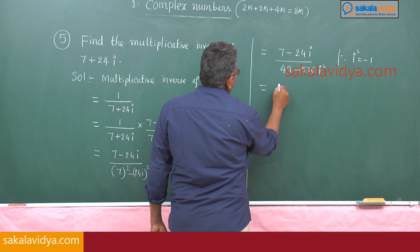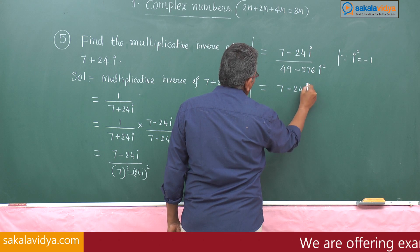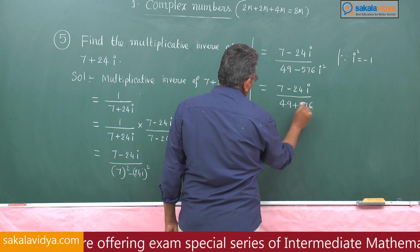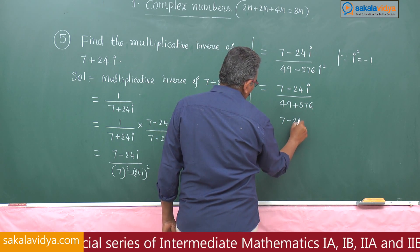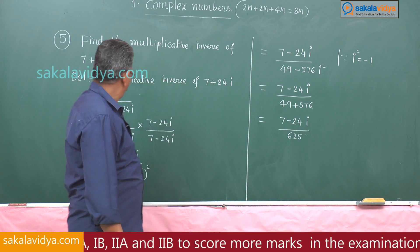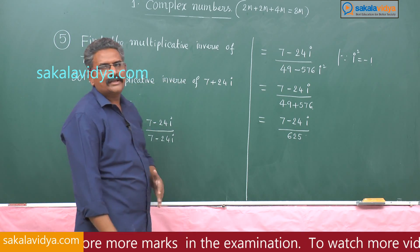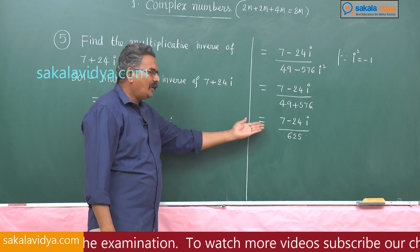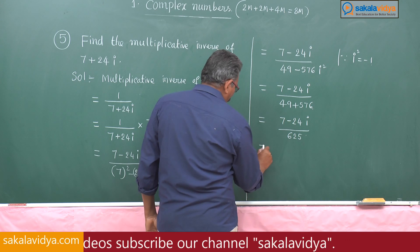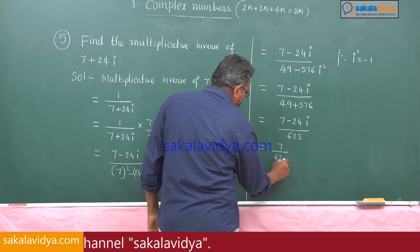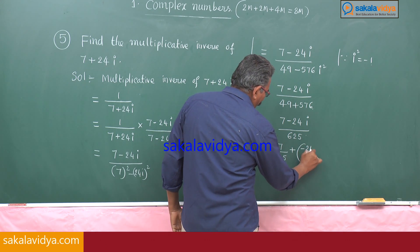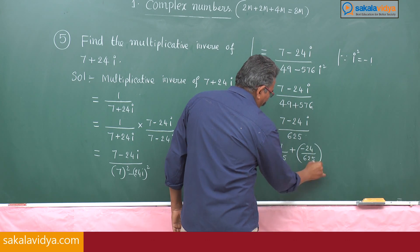So the multiplicative inverse of 7 + 24i is (7 - 24i)/625. If you want to write it in the form a + bi: this equals 7/625 + (-24/625)i.